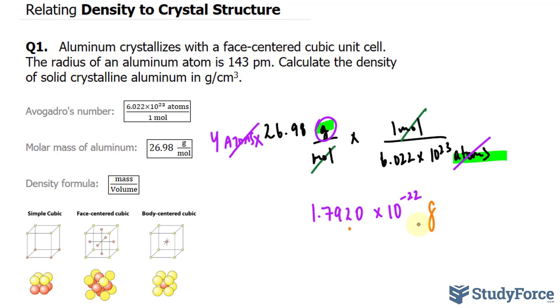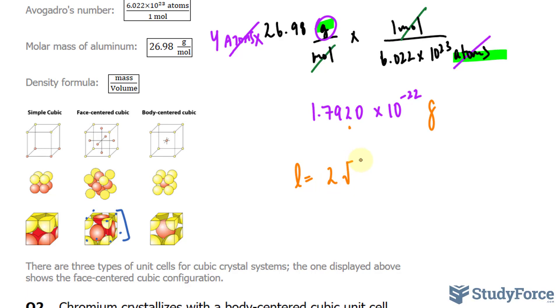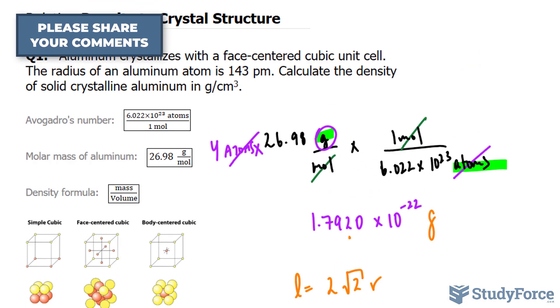Next, we have to calculate the edge length of the unit cell in meters. And that can be done from the atomic radius of aluminum. Now for a face-centered cubic structure, the length is 2 times the square root of 2 times the radius. Our radius was given at 143 picometers.